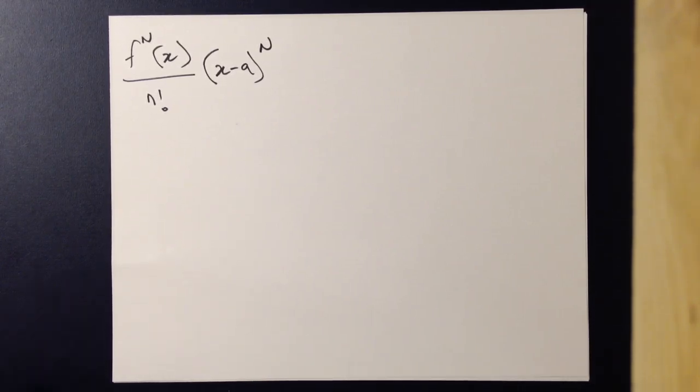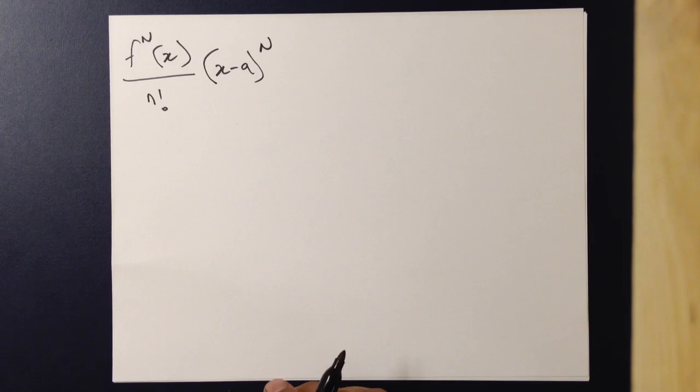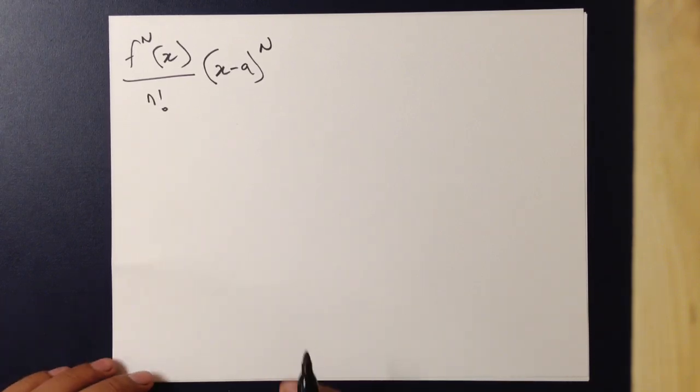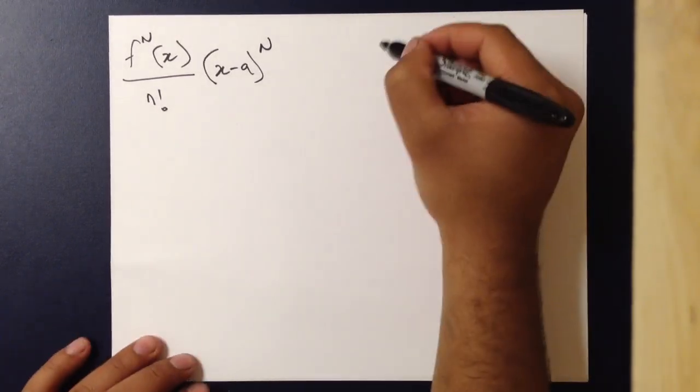But it's not always possible to reach the infinite term. And in those situations, we can only go to a certain polynomial, an nth degree polynomial.